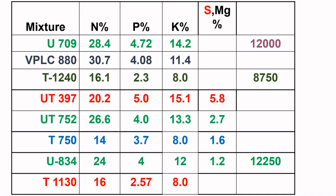U834 is another blend with 24% nitrogen, 4% phosphorus, and 12% potassium. T1130 is currently not available in the Sri Lankan market but was one of the most popular blends. VPAC880 is one popular blend, and UT397 is also one of the most popular blends.